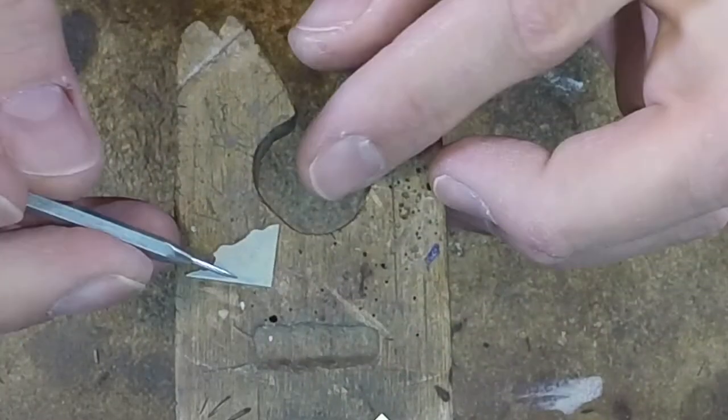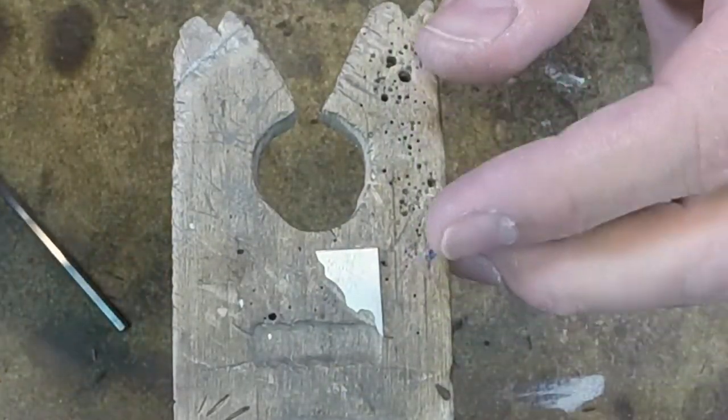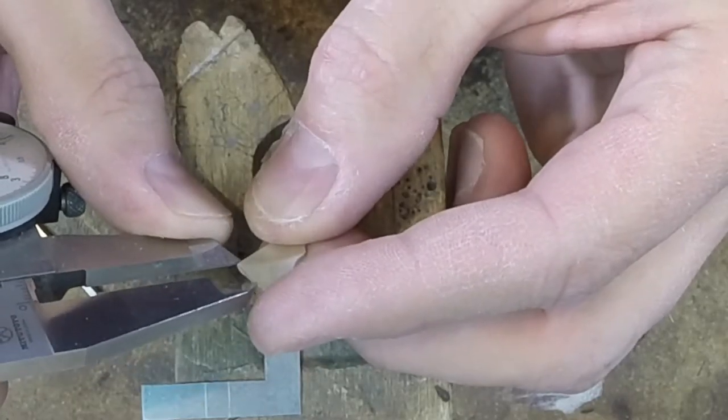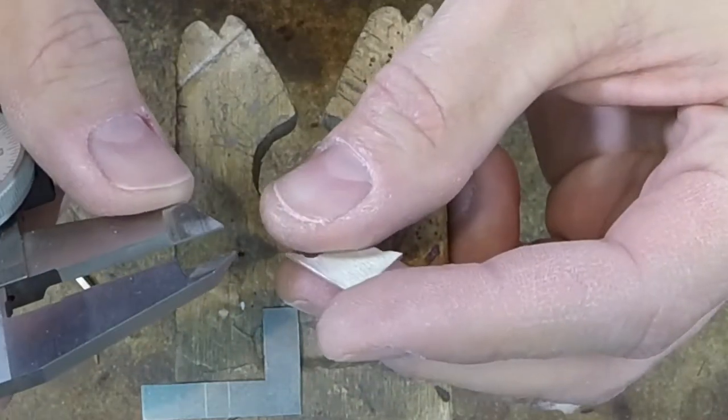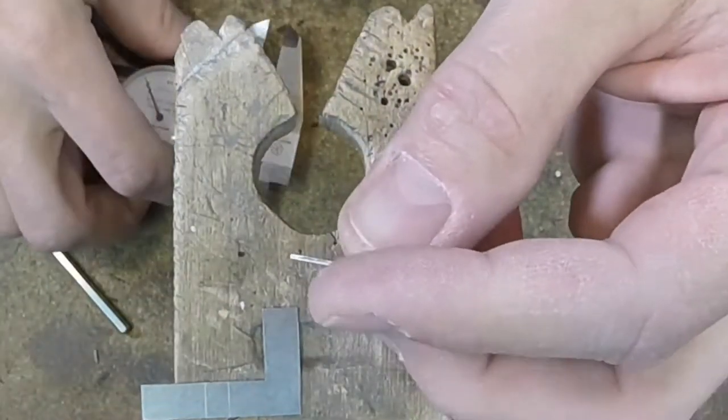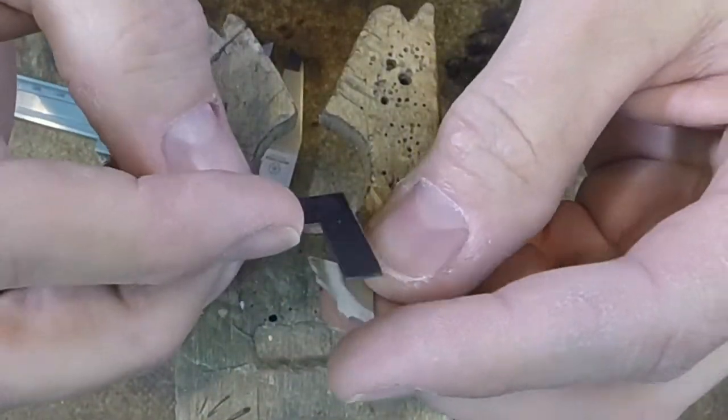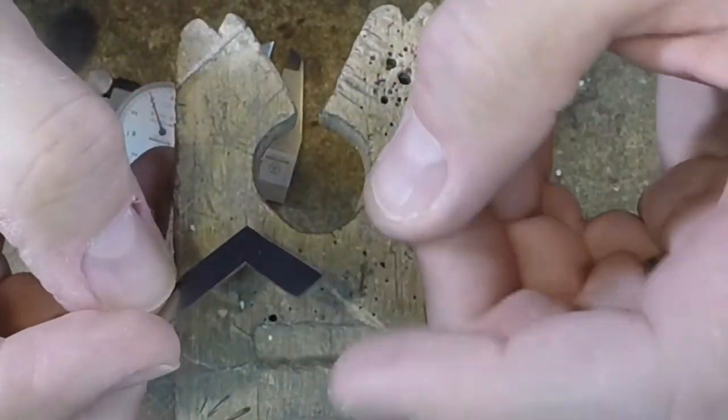So now this edge and this edge are exactly 90 degrees. Now if I want, say I want to make a 7mm square, I could go in and make a little mark at 7mm, and the same thing on the other.